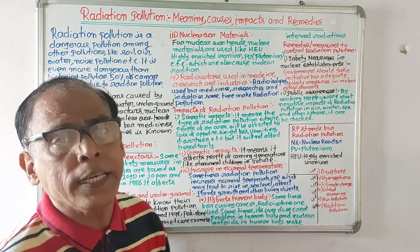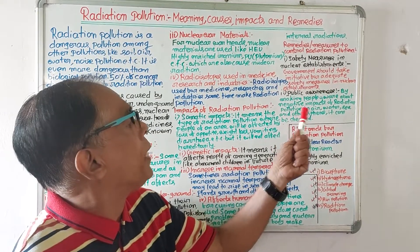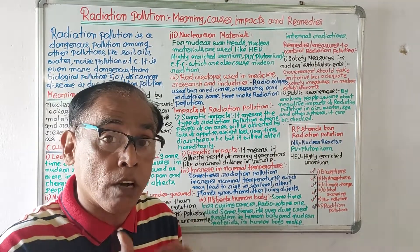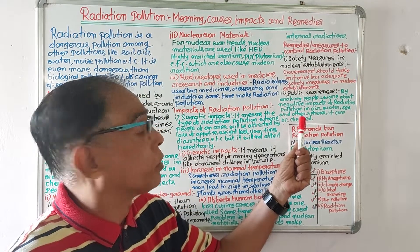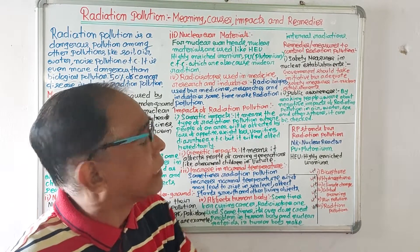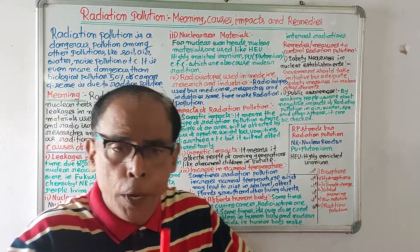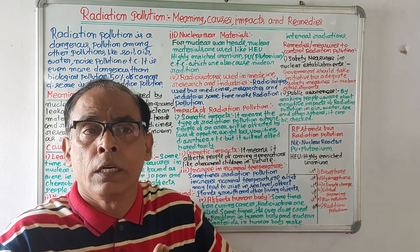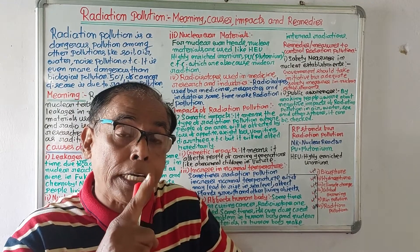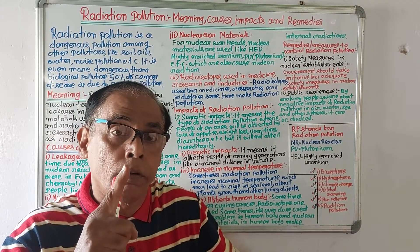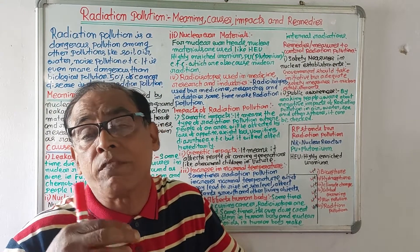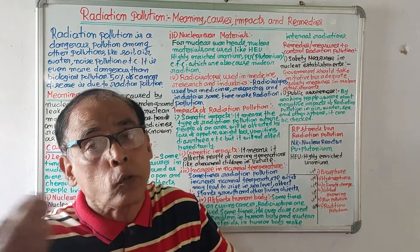The second remedy is public awareness. By making people aware about the negative impacts of radiation pollution in air, water, sea and other spheres, it can be checked. If people are made conscious about the negative impacts of radiation pollution, then radiation pollution can be checked to a considerable extent.